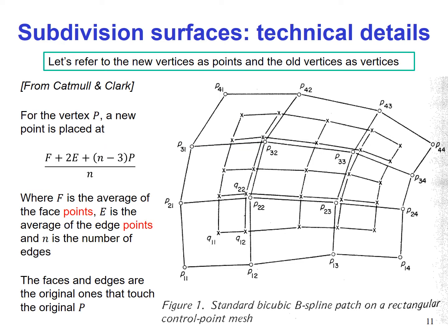For a vertex p, a new point is placed according to the formula: (F + 2E + (n−3)×p) / n, where n is the number of edges connecting to vertex p. F is the average of the face points of all faces connected to vertex p — for example, if four faces share this vertex, we take the average of those four face points.